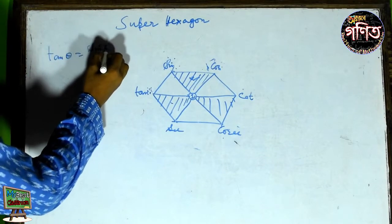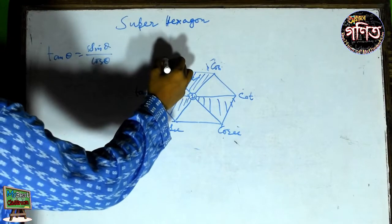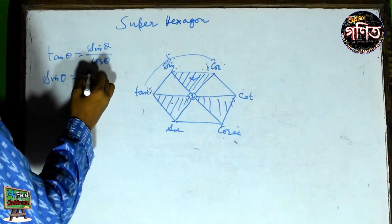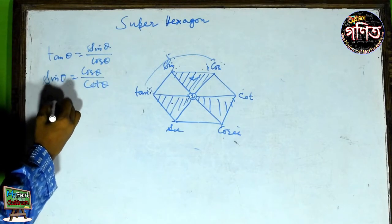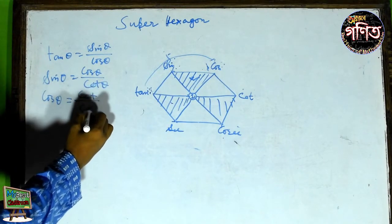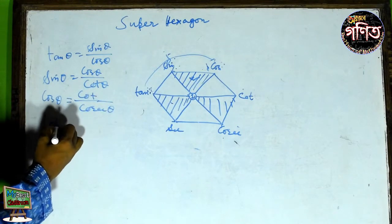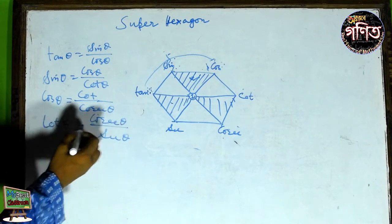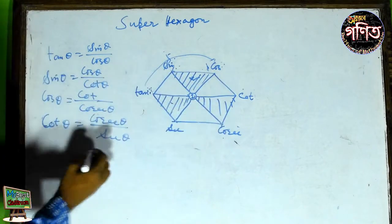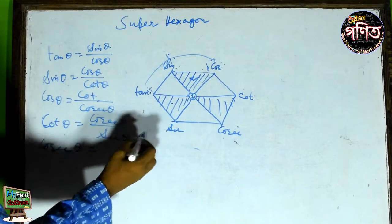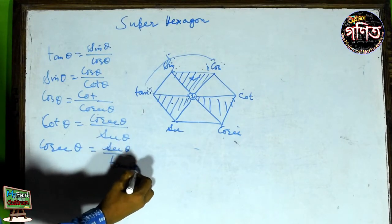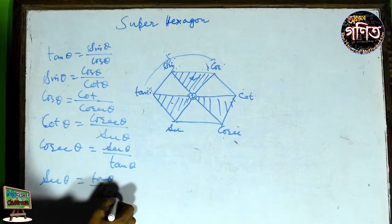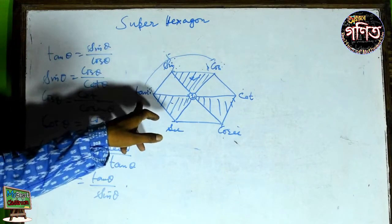Tan theta is equal to sin theta by cos theta. Sin theta is equal to cos theta by cos theta. Then sin theta equals cos theta by cos theta. Cot theta equals cosec theta by sec theta.